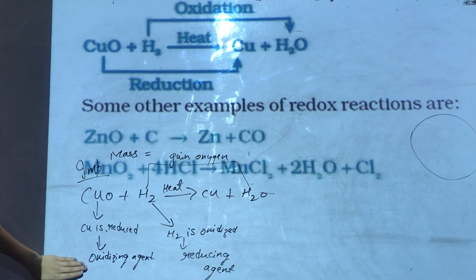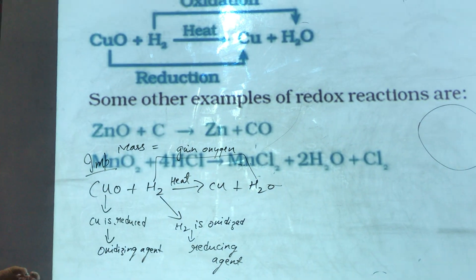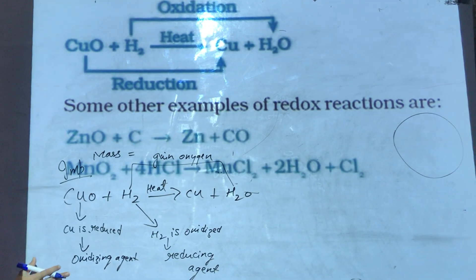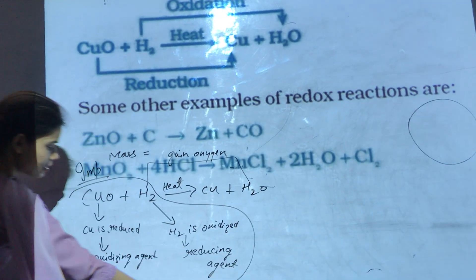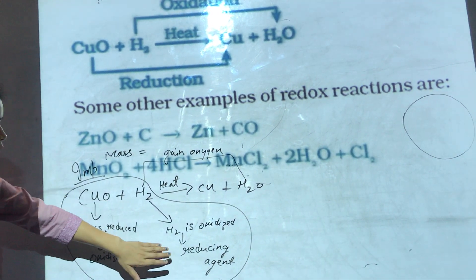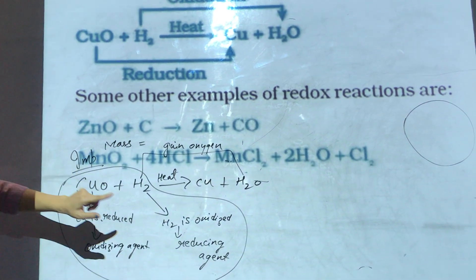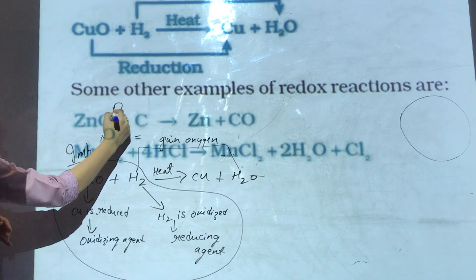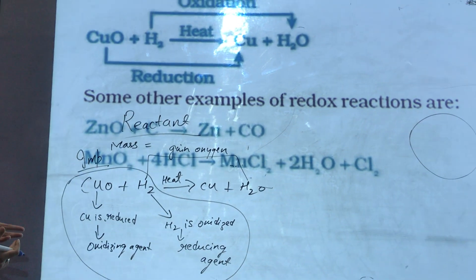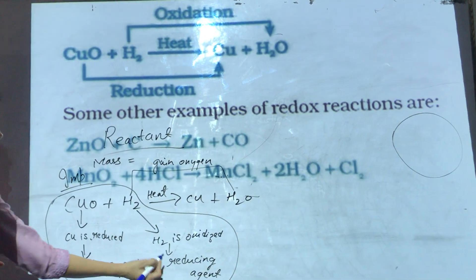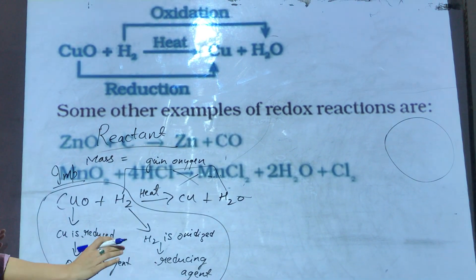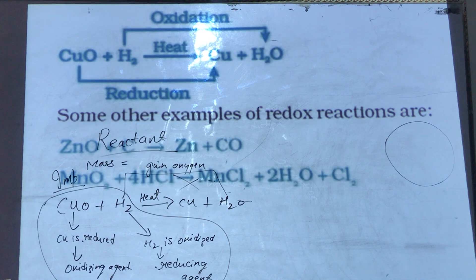So CuO is reduced, so it is an oxidizing agent. H₂ is oxidized, so it is a reducing agent. You can clearly observe from this example that always, in every reaction, the oxidizing agent and reducing agents — the element which is reduced or oxidized — will always be on the reactant side. So whenever this type of question comes in your exam, asking which one is the oxidizing agent, which one is the reducing agent, which one is oxidized, which one is reduced, just look at the reactant side and write the correct answer.